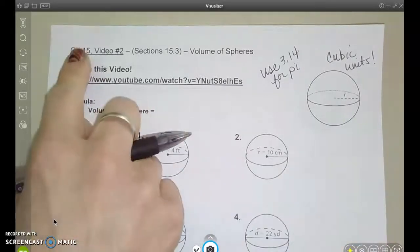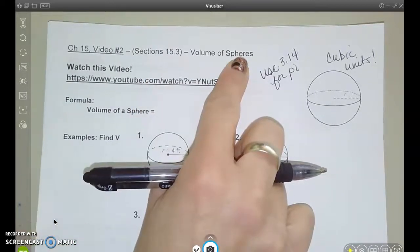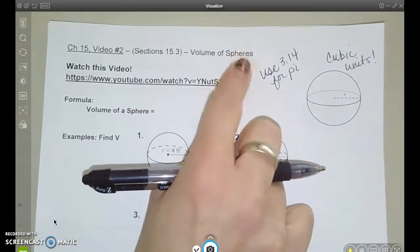This is video two for chapter 15, but it covers section 15.3, volume of spheres. So we've already talked about cylinders and cones, and now we're going to do spheres.